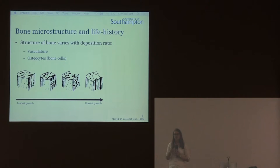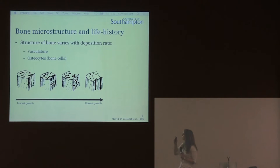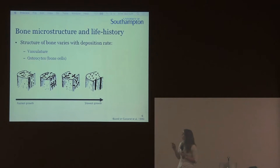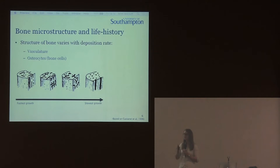We know that bone microstructure in birds varies with the rate at which that bone is deposited. In very fast-growing bone, we have fairly dense but not very well-organised vasculature. In very slow-growing bone, we have much less dense but more longitudinally arranged vasculature. Similarly with the osteocytes — in fast-growing bone we have plump osteocytes that are not very well-organised, and in slow-growing bone we have much more flat and disc-shaped osteocytes which are more longitudinally arranged.